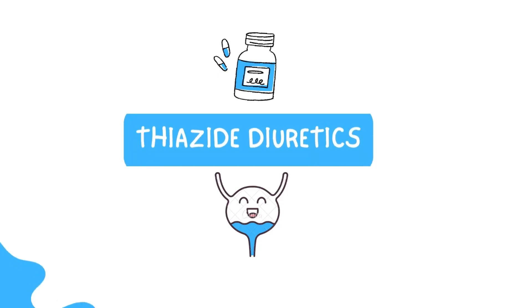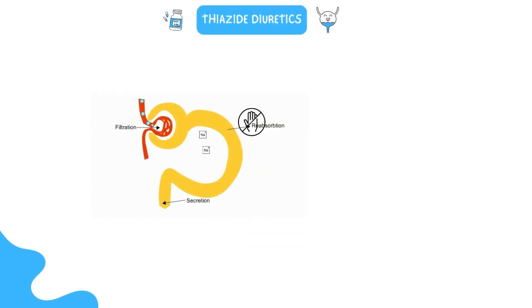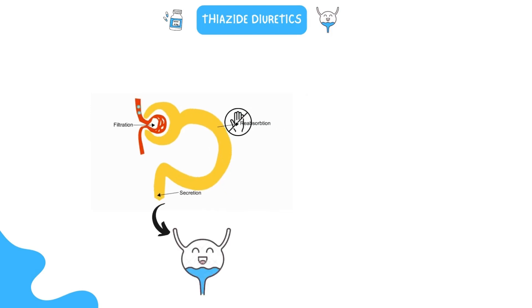Let's start with thiazide diuretics. Thiazide diuretics prevent the reabsorption of 3-5% of luminal sodium in the distal convoluted tubule of the nephron, thus causing natriuresis and diuresis.